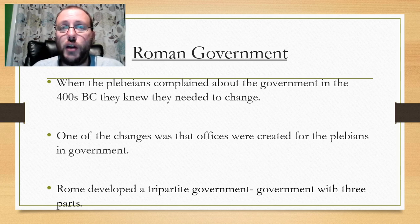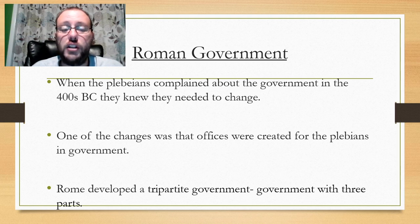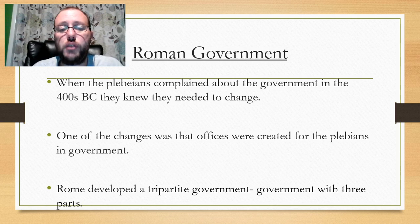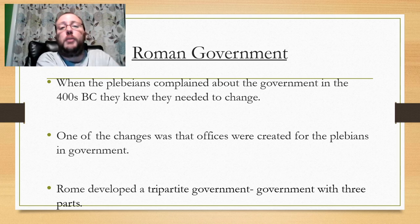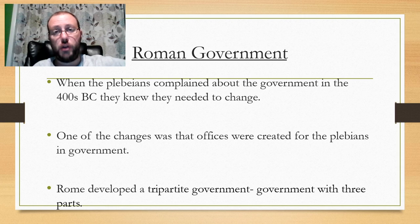The Plebeians said, hey, wait a minute, we really don't like this idea. We don't really know what's going to happen, so we're kind of backing away a little bit. When the Plebeians complained about the government in the 400s BC, one of the changes was that offices were created for the Plebeians in government. They said, okay, we'll give y'all a little bit of space in the government — basically to shut them up.